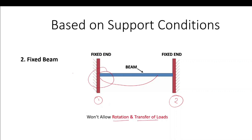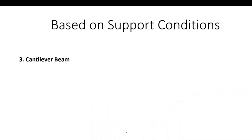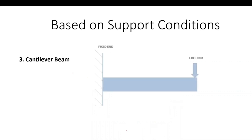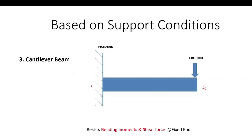When a beam is fixed at one end and free at the other end, that particular beam is called a cantilever beam. The basic characteristic of a cantilever beam is that it can resist bending moments and shear forces at the fixed end.